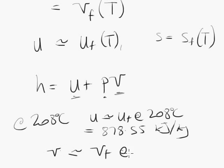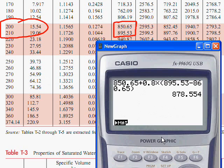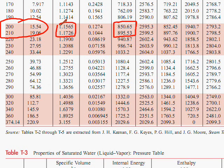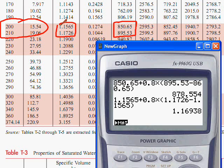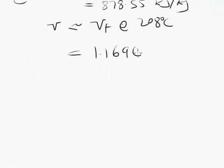We're going to take V as being approximately Vf at 208 degrees. So we're now interpolating between these two. And that, of course, is times 10 to the minus 3 meters cubed per kilogram.